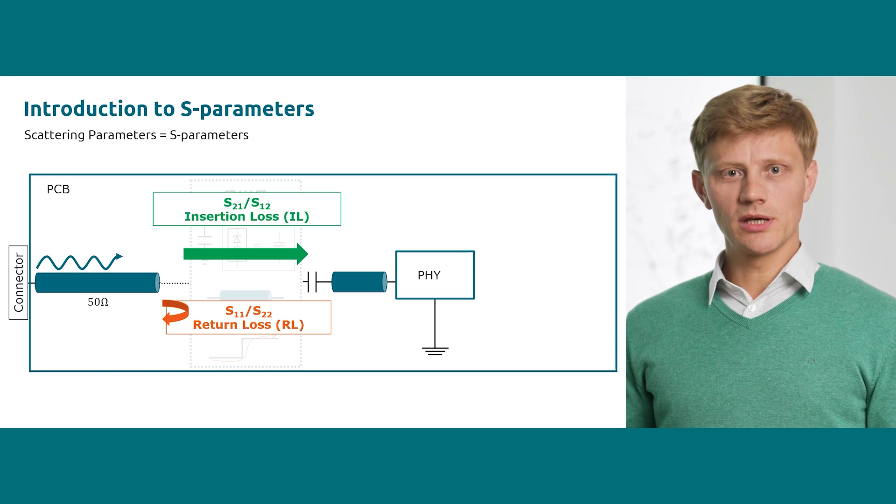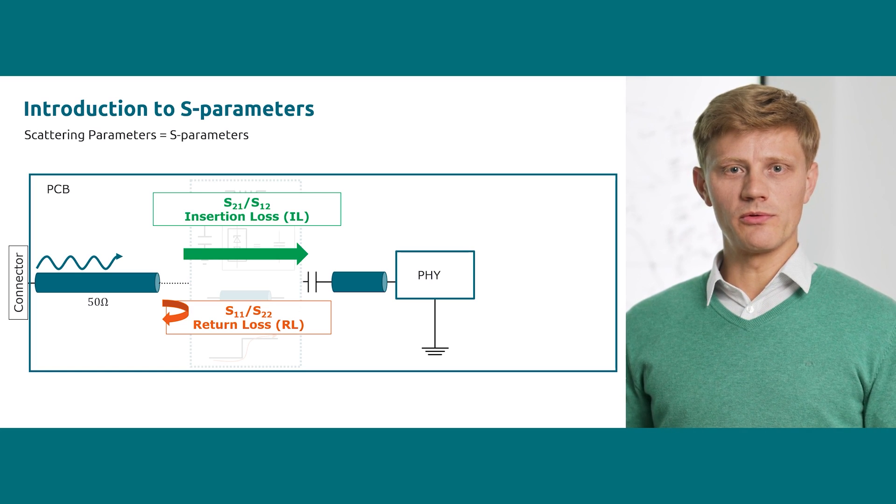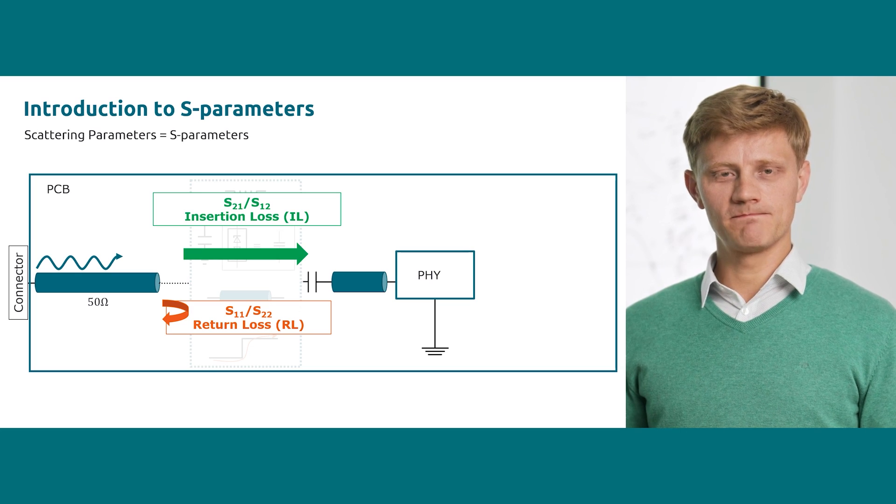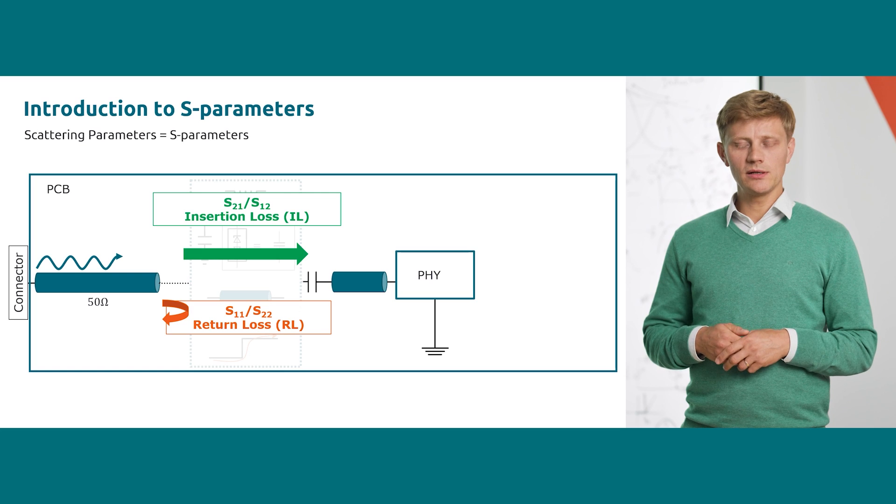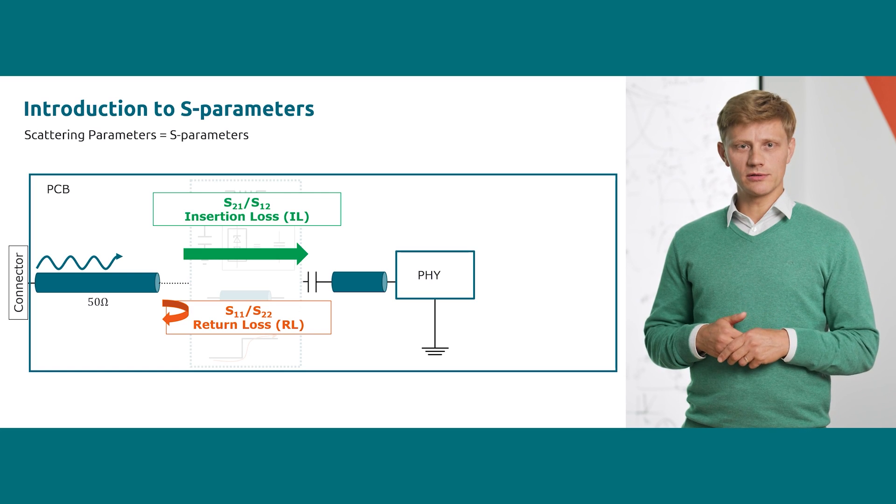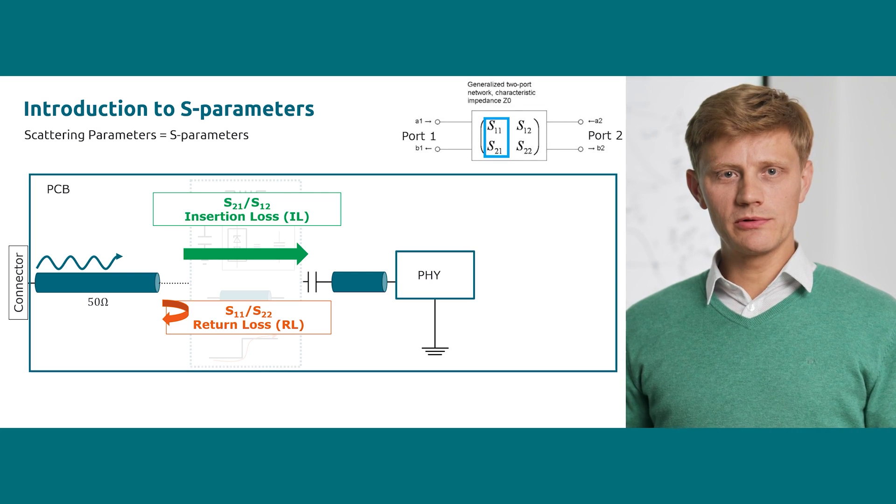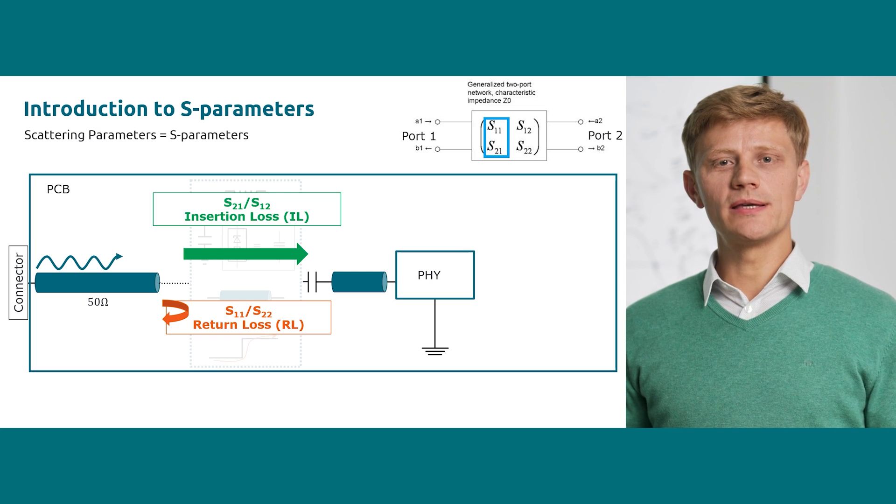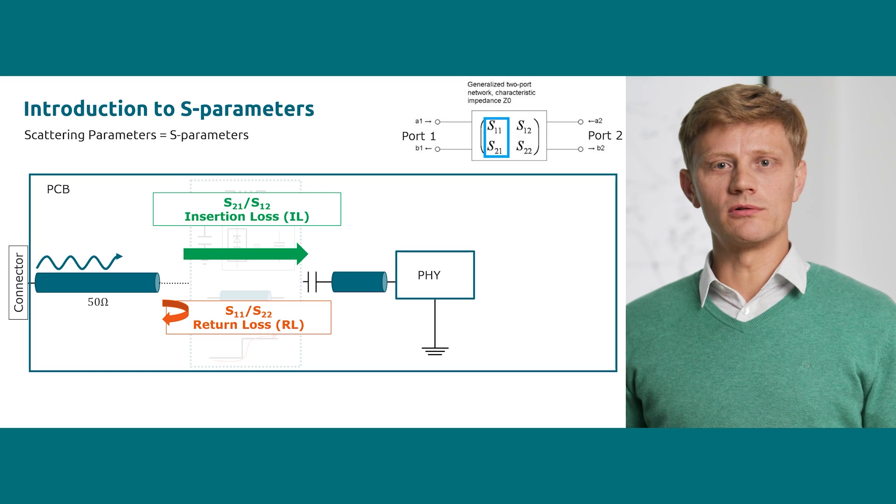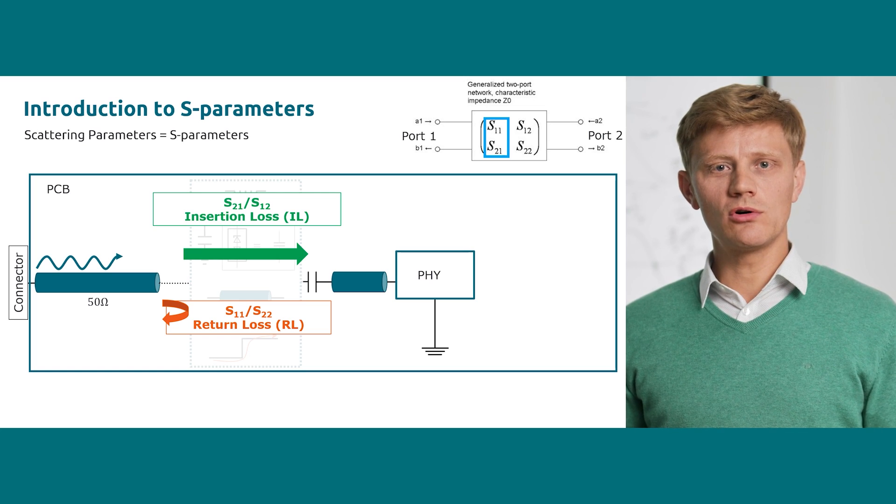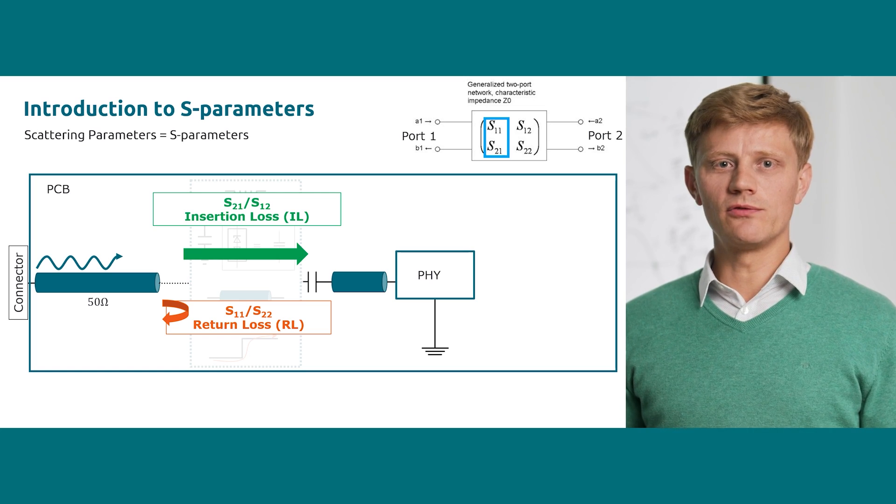The insertion loss can be seen as a transfer function with respect to the reference impedance. Typical reference impedances are 50 ohms for the single ended and 100 ohm for a differential system. In network theory, scattering parameters are organized in a matrix where S11 or S22 are standing for return loss and S21 or S12 are standing for insertion loss.